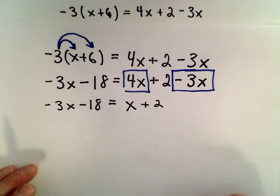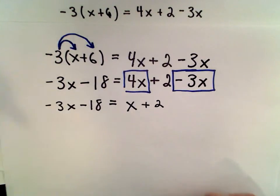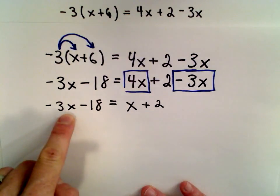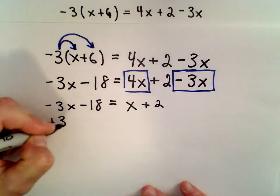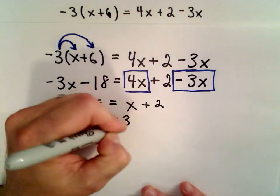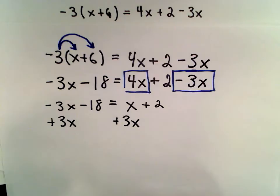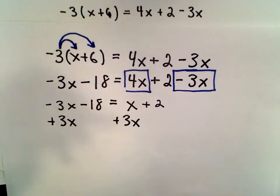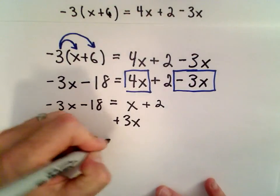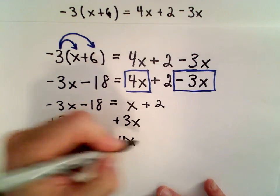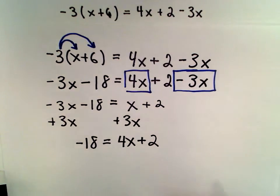My goal at this point is to get all the x's on the same side and all the numbers on the other. To move the negative 3x to the right side, I'm going to add 3x to both sides. You could have subtracted x from both sides as well. So negative 3x plus 3x is 0x. We're left with negative 18 on the left. 1x plus 3x is 4x plus 2.